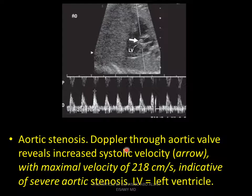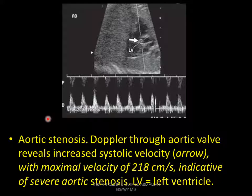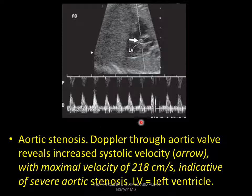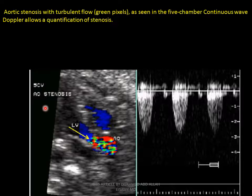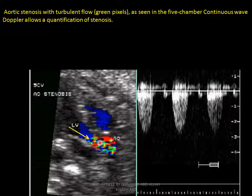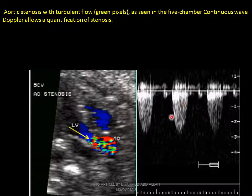Aortic stenosis Doppler through the aortic valve shows increased systolic velocity, with maximal velocity of 218 cm/s, indicative of severe aortic stenosis. We see increased velocity through the aortic valve, indicative of aortic stenosis. Aortic stenosis turbulent flow — we see green pixels as seen in the five-chamber view. Continuous wave Doppler allows quantification of stenosis, showing aortic flow with high maximal velocity.